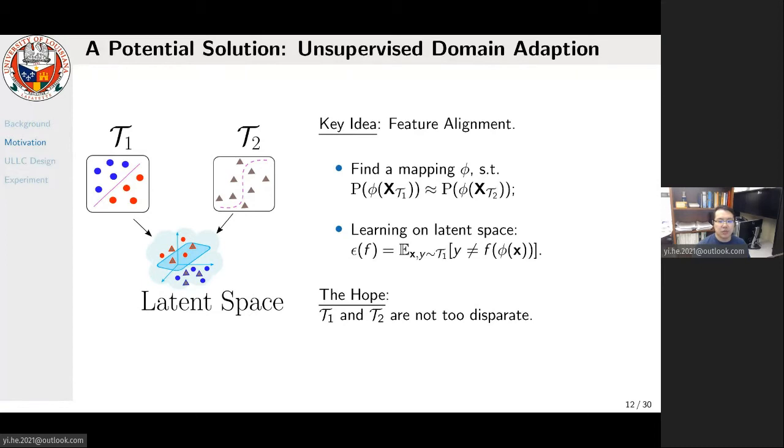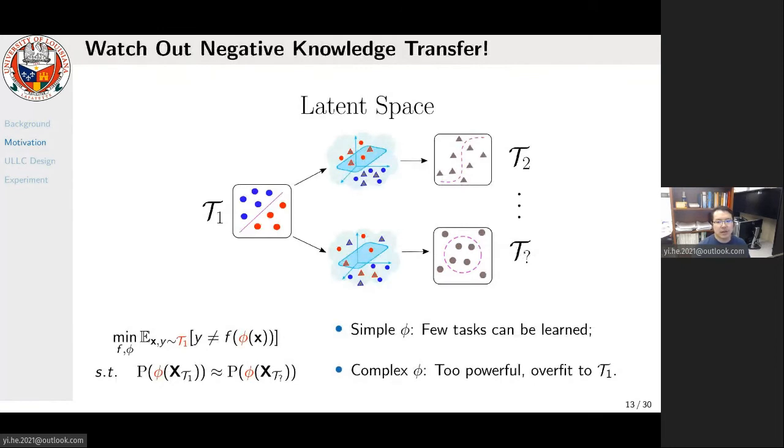But the hope of adapting UDA to work in our scenario is that the two tasks cannot be too disparate. Unfortunately, such hope is not likely to always hold, because given a series of tasks, there must exist some tasks with data distributions very different from the original labeled environment. In this case, it is difficult to find a mapping function with properly chosen complexity that can tell us which tasks the knowledge could be transferred to and which not. If we choose a too simple function, then it is not capable of capturing the commonality between two tasks even slightly different. It will tell us all tasks are disparate and no useful information can be transferred. Then our model fails.